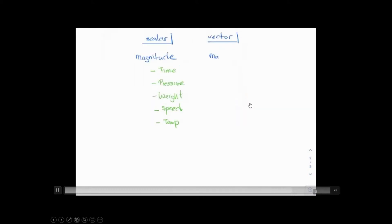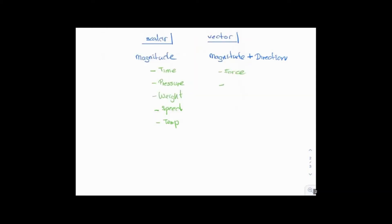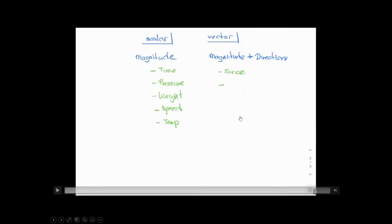Vectors are combinations of magnitude and direction. Force is an example — I can push something in this direction or pull on it in the opposite direction. As soon as direction is involved, it becomes a vector. Acceleration is a vector — you can speed up in one direction and slow down in the opposite. Velocity is a vector. Speed is how fast; velocity is also which direction. If I'm going 60 miles per hour, that's speed. If I'm going 60 miles per hour moving north, that's velocity.